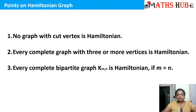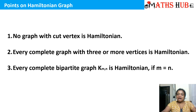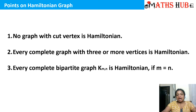To summarize: a graph which possesses an Eulerian circuit is called a Eulerian graph — in that, we cannot repeat the edges and all edges must be traveled exactly once. When a graph possesses a Hamiltonian circuit, that graph is said to be Hamiltonian, and in Hamiltonian we need to cover all the vertices exactly once.